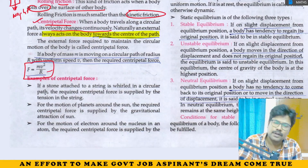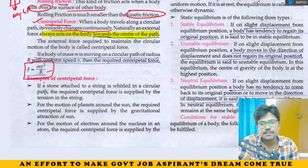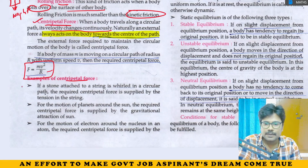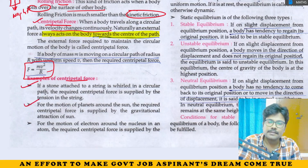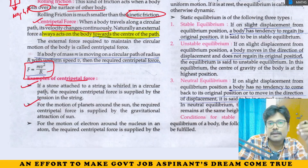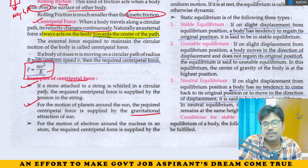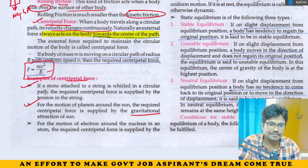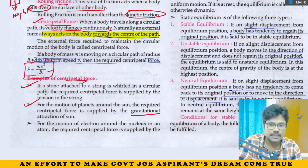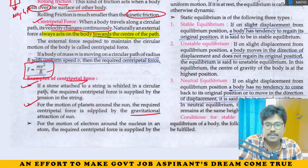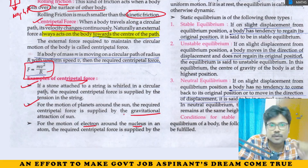The formula for centripetal force is F = mv²/r, where r is the radius. Examples of centripetal force: for planets orbiting the sun, the gravitational force acts as the centripetal force.